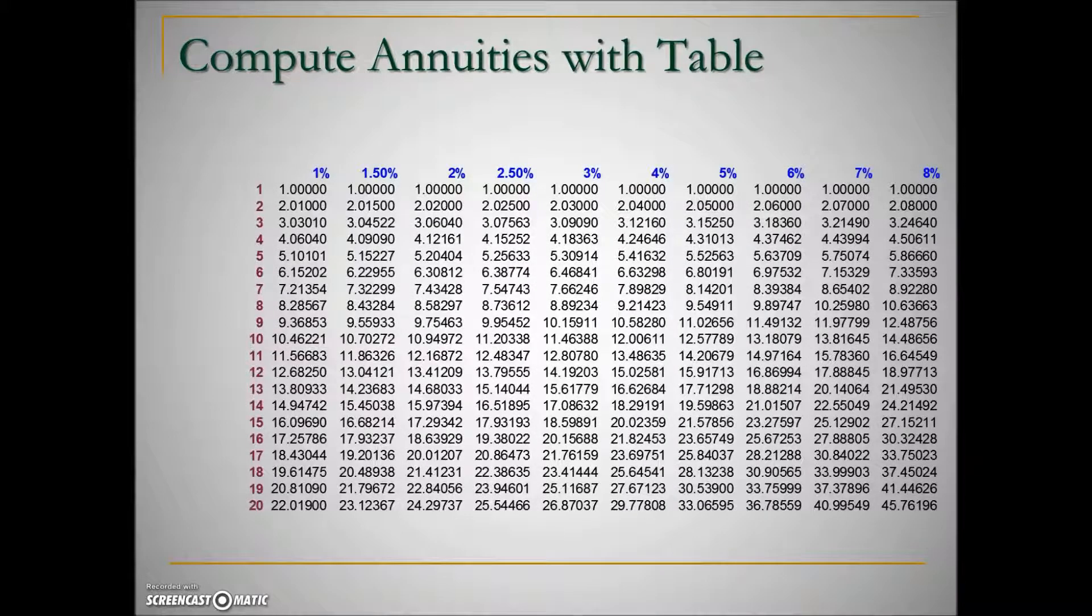Here is an annuity table. Across the top of each column is the interest rate per period, and the rows represent the number of periods in the annuity, in other words, the number of payments or deposits being made.